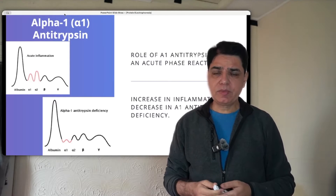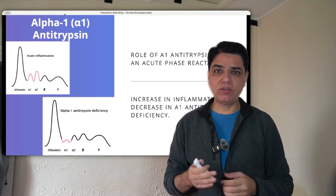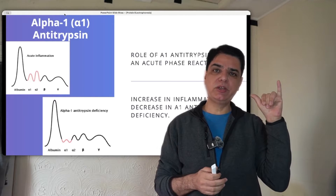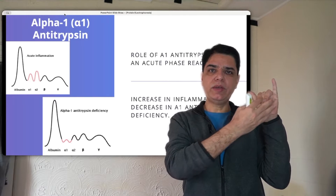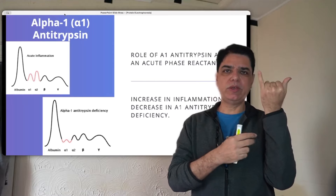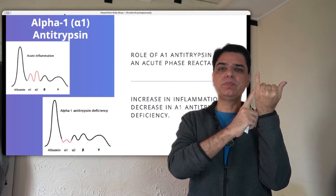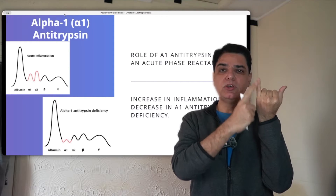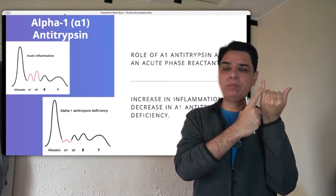If you look at the protein electrophoresis graph, it might appear in a particular manner — it may even be a mirror image, so you just have to flip it. The first spike you see is your albumin levels. Albumin is one of the major components of plasma protein, so that first spike is actually your serum albumin.